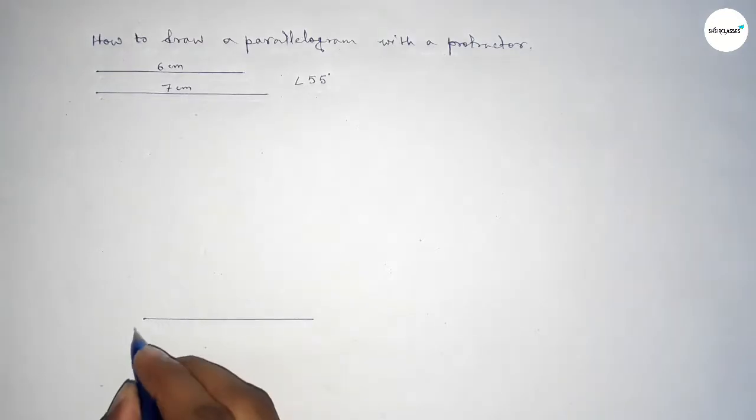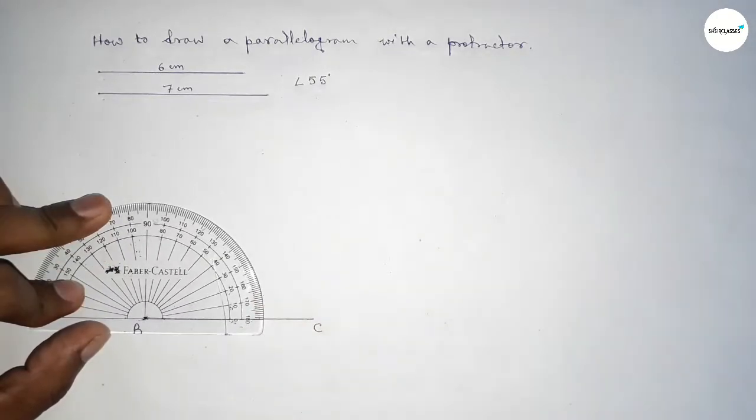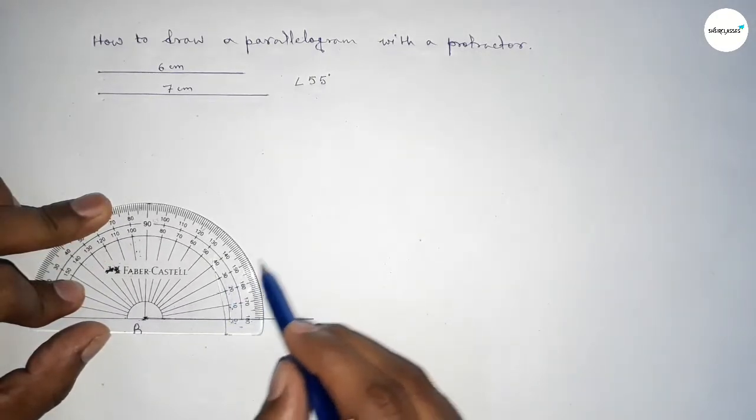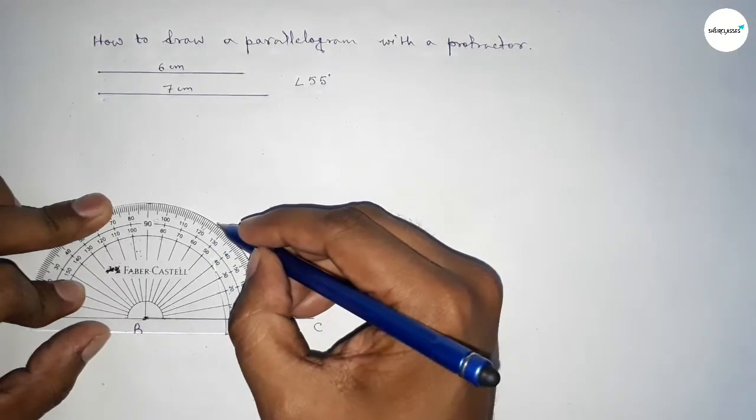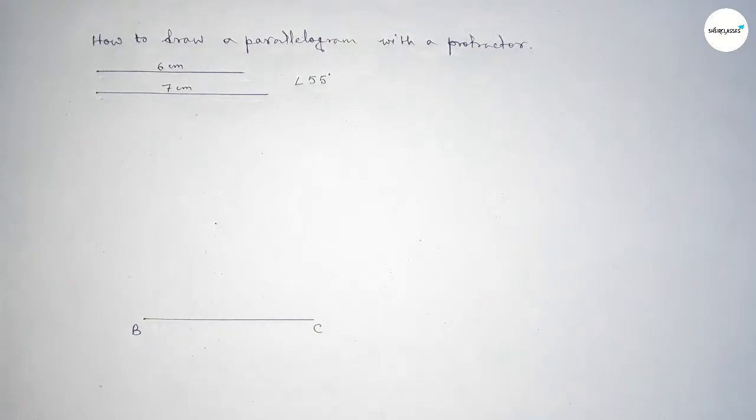Taking here point B and here C. Now we have to draw a 55-degree angle by using a protractor on point B. So this is 0, 10, 20, 30, 40, 50, and this is 55 degrees.